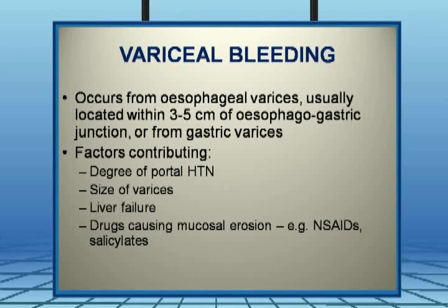Variceal bleeding occurs when increased portal pressure causes the thin venous vessel wall to give way. These varices of the esophagogastric junction are typically located within 3 to 5 centimeters from the gastric junction. Factors contributing to bleeding include the degree of portal hypertension, the size of the varices, concomitant liver failure, and drugs causing mucosal erosion such as NSAIDs and salicylates.